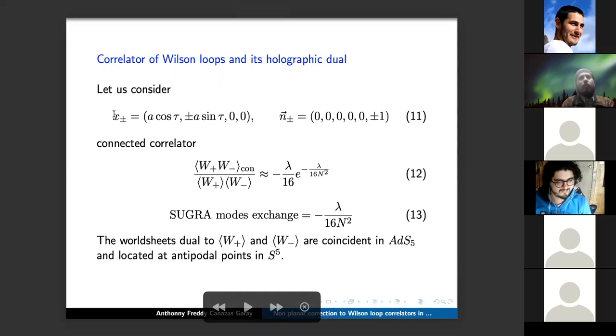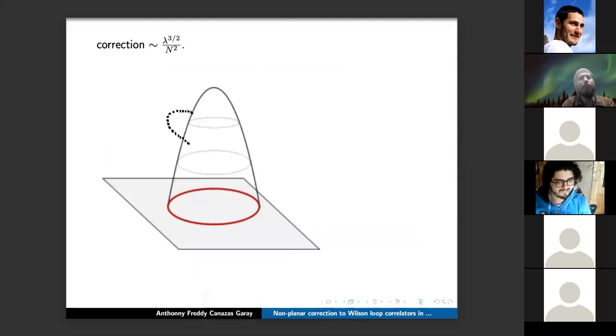Next. Here we can see how the handle contribution reduces to a supergravity mode exchange. Next. And this is the supergravity mode exchange. Next. Now for the correlator, we consider coincident circles but with opposite orientations and the unit vector n with opposite directions. The connected correlator can be computed with the matrix model, and we get the CFT prediction for the supergravity mode exchange.